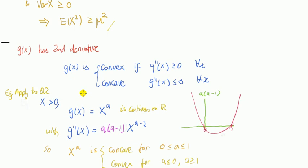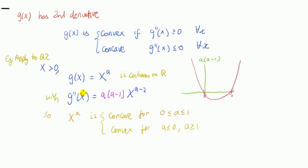Going back to the second example, just applying it to here. For X bigger than 0, the random variable X bigger than 0, the function here takes the general form X to the power of a, where in the example we used a as 2, but let's just say for any a. We know that this function is continuous on R.